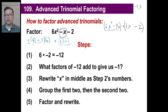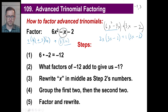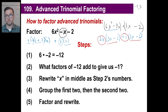Let's factor out of the first group. What can we factor out of 6x squared and negative 4x? We can pull out 2x. After dividing, 6x squared divided by 2x is 3x, and negative 4x divided by 2x is negative 2. So we get 2x times the quantity 3x minus 2. For the second group, there's really nothing to factor out other than 1, giving us 1 times 3x minus 2.